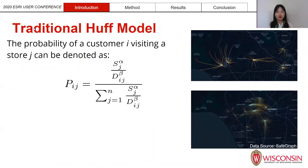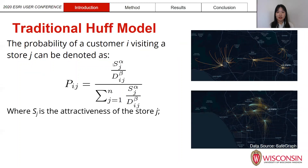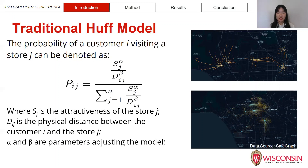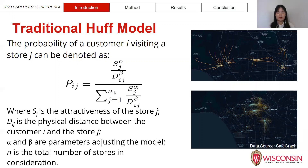This is the actual formula of the Huff model, where we predict the probability of a customer i visiting a store j. Here, sj means the attractiveness of store j and dij means the distance between customer i and store j. The two parameters alpha and beta are used to adjust and calibrate the model. And n here is the total number of stores in consideration — that is the total number of stores a customer i will visit.